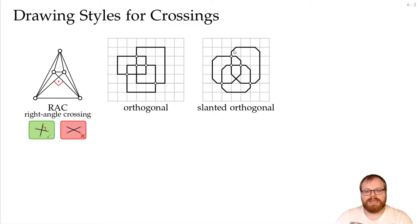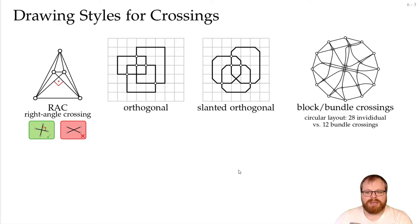All the edges are polylines of vertical, horizontal, and diagonal segments, and the crossings are only between diagonal ones. So here we can clearly see what are the crossings and what are the vertices. Well here it's a bit tougher. And there are the block or bundle crossings that we had a look at earlier.